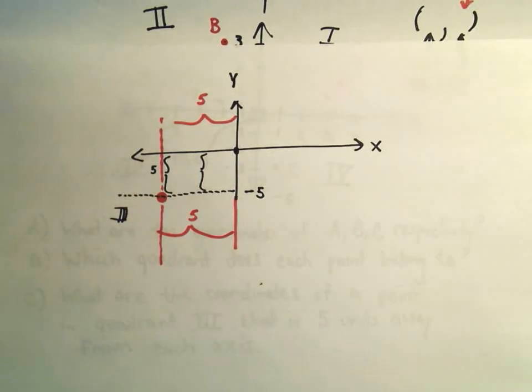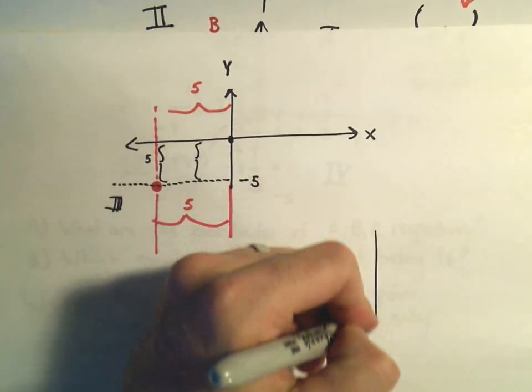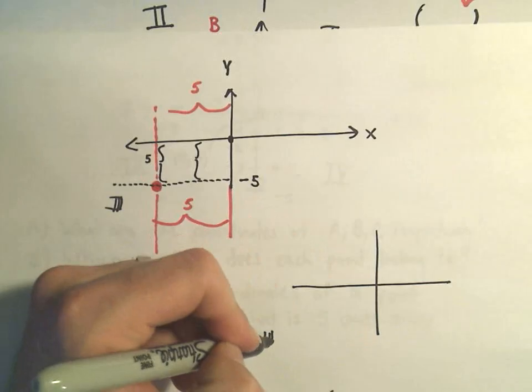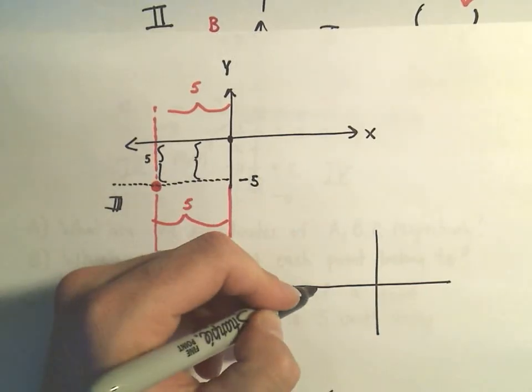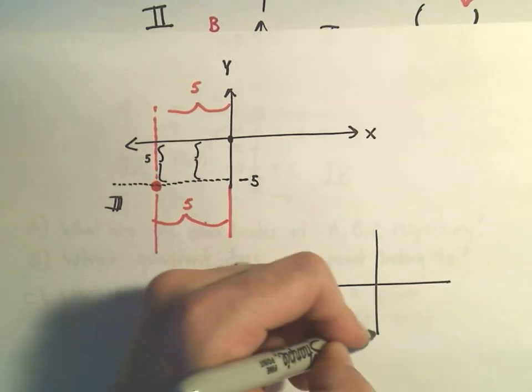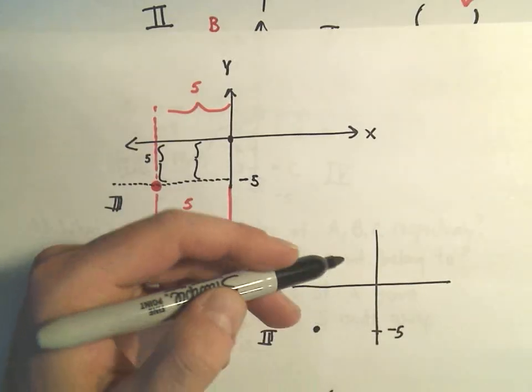So the basic idea is to be 5 units away from the x axis. This picture's a little cluttered here. So the only way to be in quadrant 3 and to be 5 units below would be at the y coordinate of negative 5.